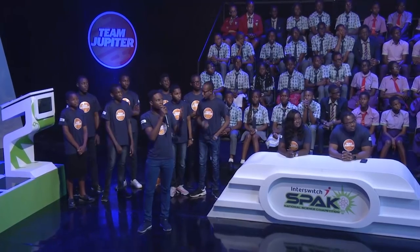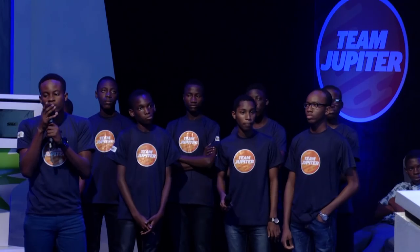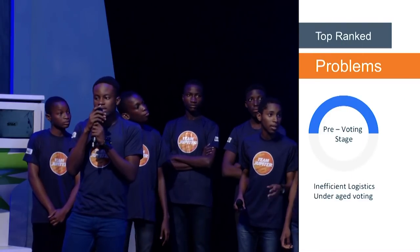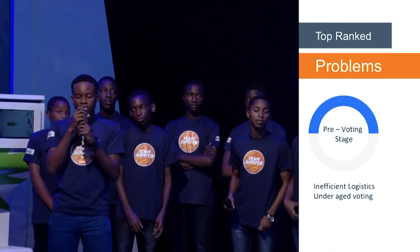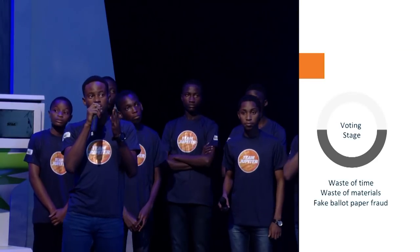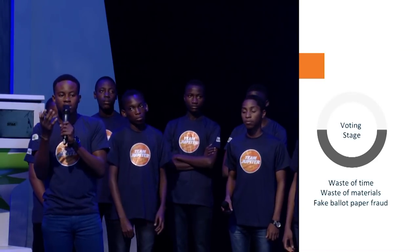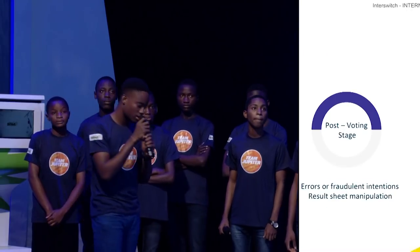We divided the problems from the electoral process into three stages: the pre-voting stage, the voting stage, and the post-voting stage. Most of the problems came from the pre-voting stage — underage voting and inefficient logistics. In the voting stage, fake ballot paper fraud decreases transparency, and then there are issues in the post-voting stage.